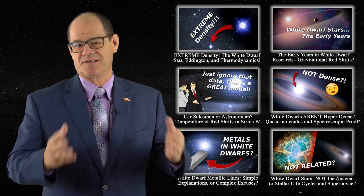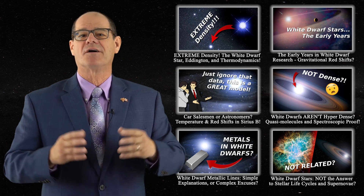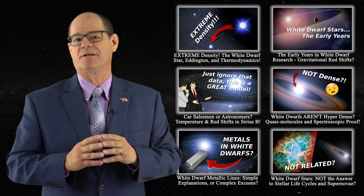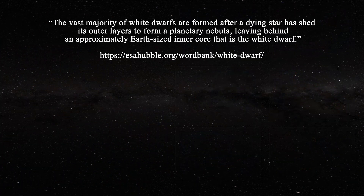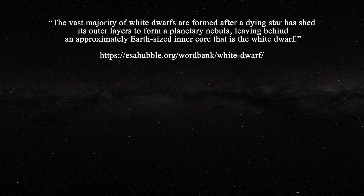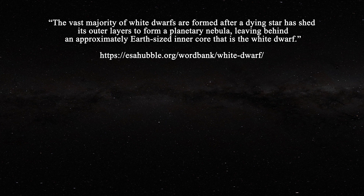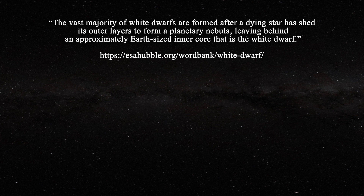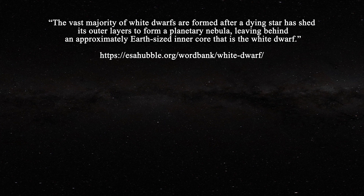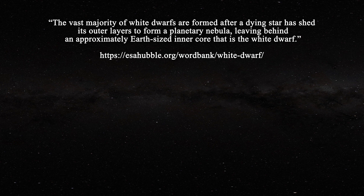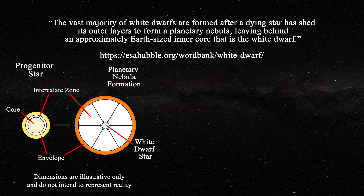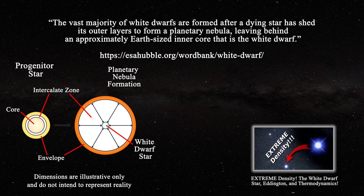This brings us to today's topic: white dwarf stars, Wolf-Rayet stars, and planetary nebulae. From the Hubble website, we learn the vast majority of white dwarfs are formed after a dying star has shed its outer layers to form a planetary nebula, leaving behind an approximately earth-sized inner core that is the white dwarf. This fits perfectly with the idea that white dwarf stars have been forced to assume a different lattice structure as a result of compression.